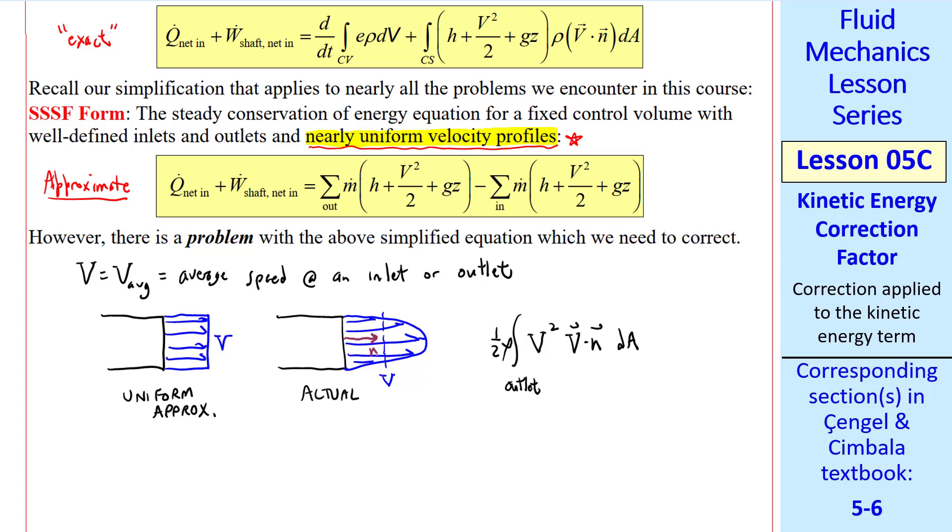In this simple case, the unit outward normal is in the same direction as v. So this dot product simply becomes v itself, the magnitude of the velocity vector, or the speed. So this integral reduces to ρ over 2, and we integrate v³ dA.